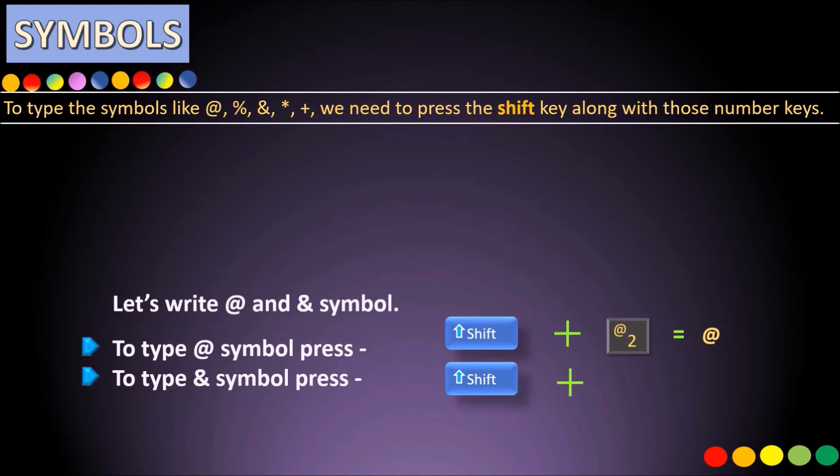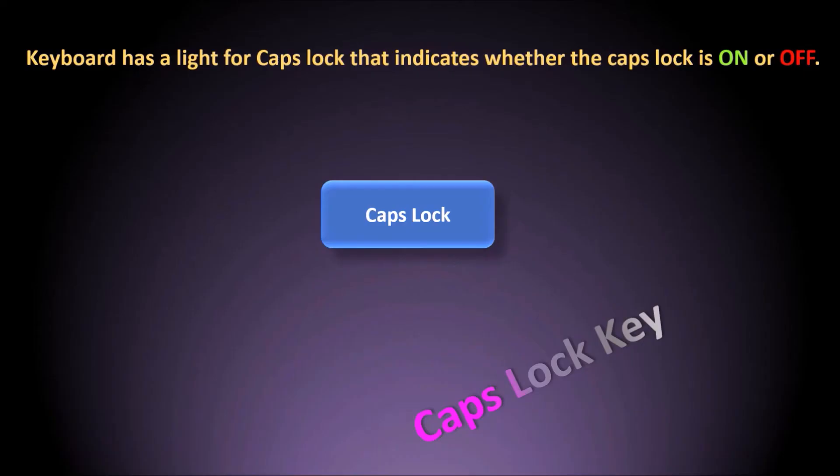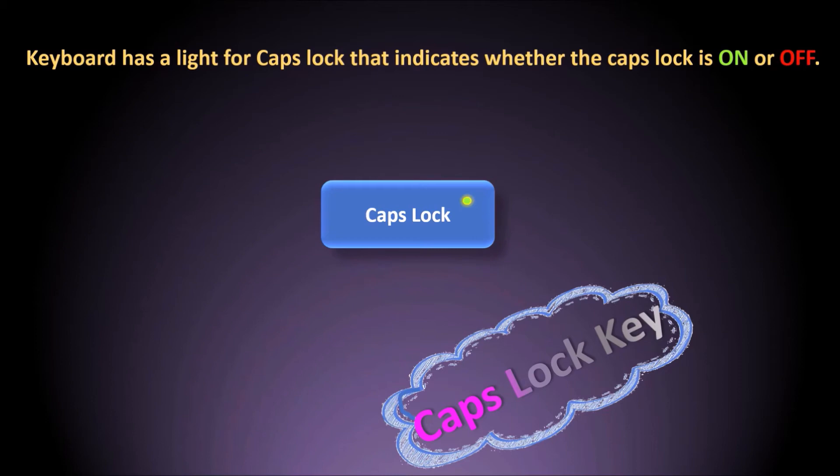The Caps Lock key is used to write the alphabet in capital letters when it is on, and in small letters when it is off. The keyboard has a light for Caps Lock that indicates whether it is on or off.